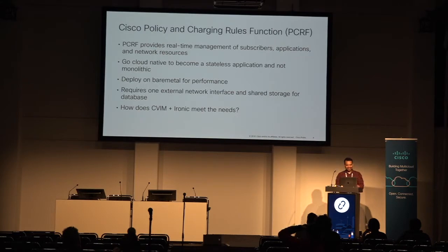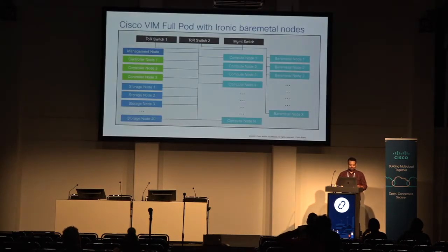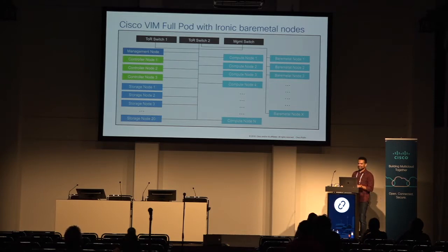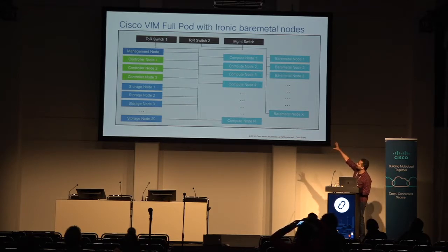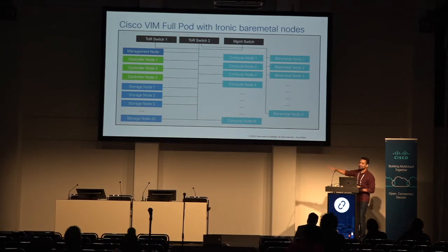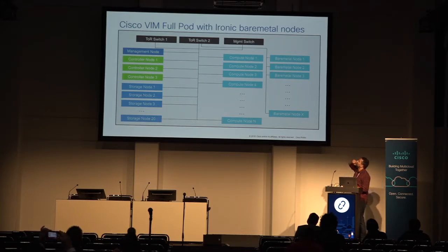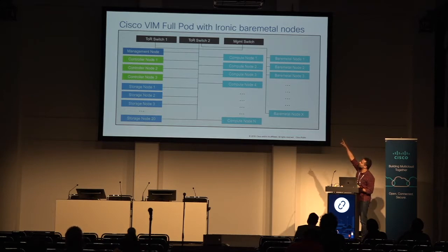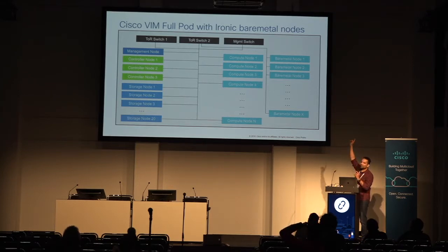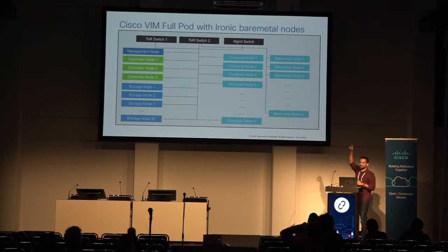So how did CWIM with Ironic meet all these needs? This is the actual architecture. Based on the previous talk, you can probably figure out that everything on the left side was the existing CWIM setup — there's a management node, controller nodes, storage nodes, and dedicated compute nodes. For Ironic, we now have additional bare metal nodes used as Ironic computes. We configure only one single interface on each of those, so they go through the same top-of-rack switch. Ironic will take care of dynamically configuring that switch and, with the other additional OpenStack services, deploy these bare metal nodes as your instances.